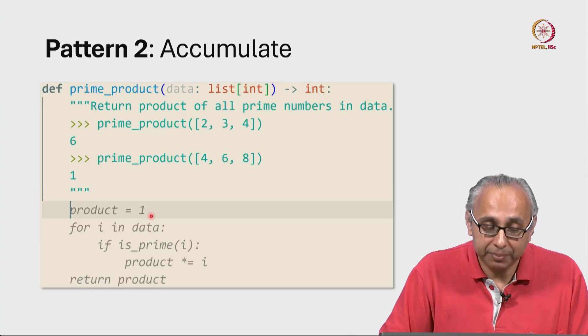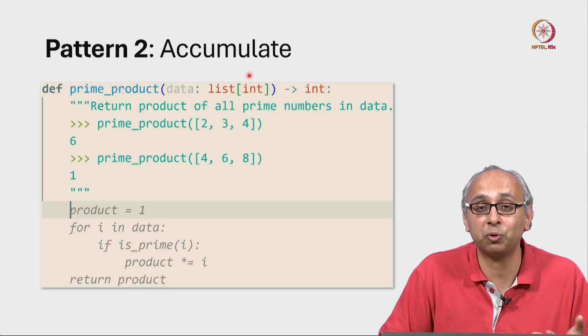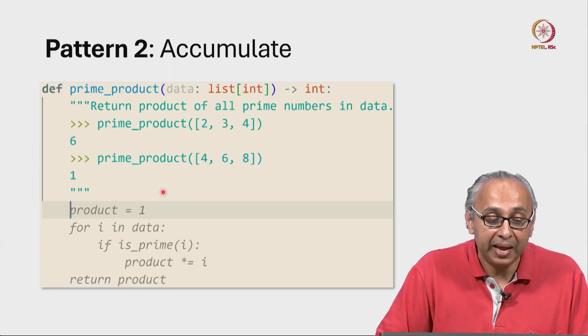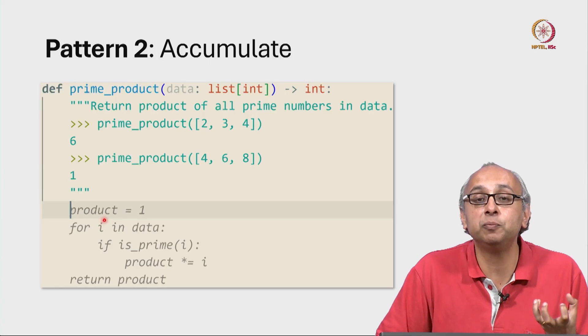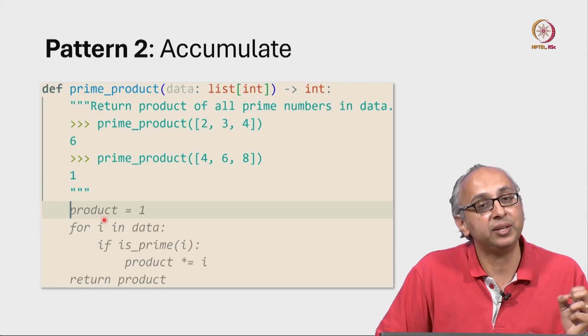Initially that answer was 1, but as we proceed it accumulates, and this is why this pattern is called the accumulator pattern. And this variable product is called the accumulator. It's the variable in which we accumulate the answer.